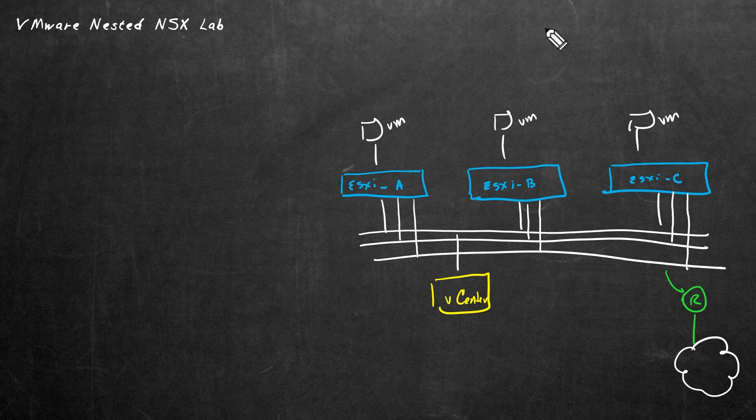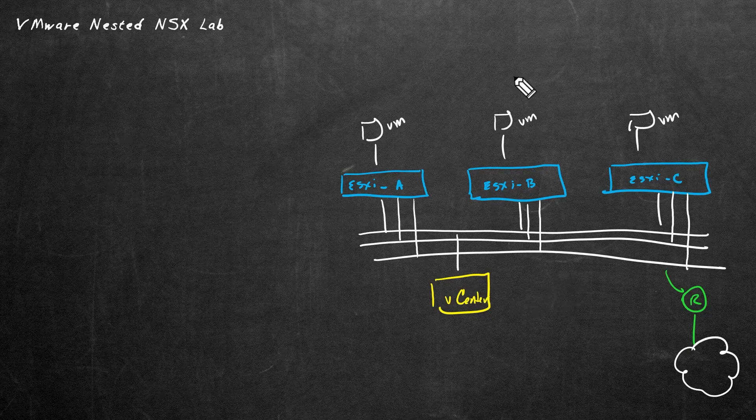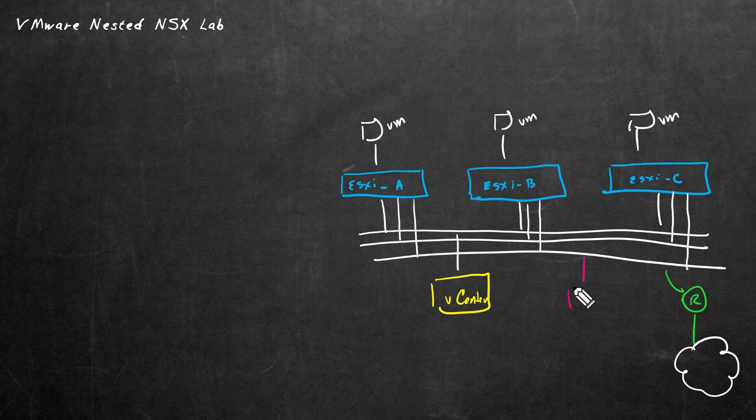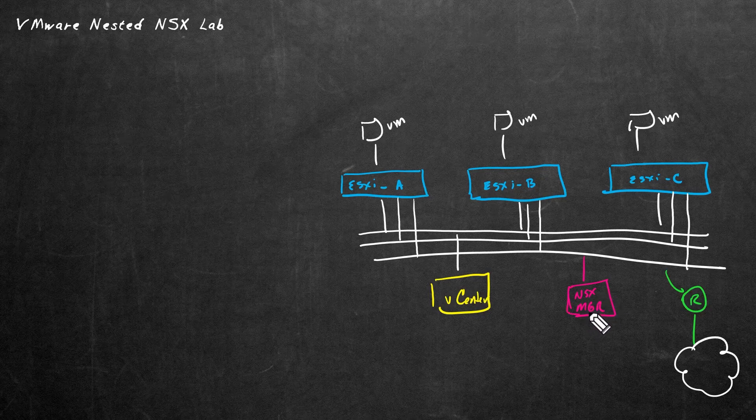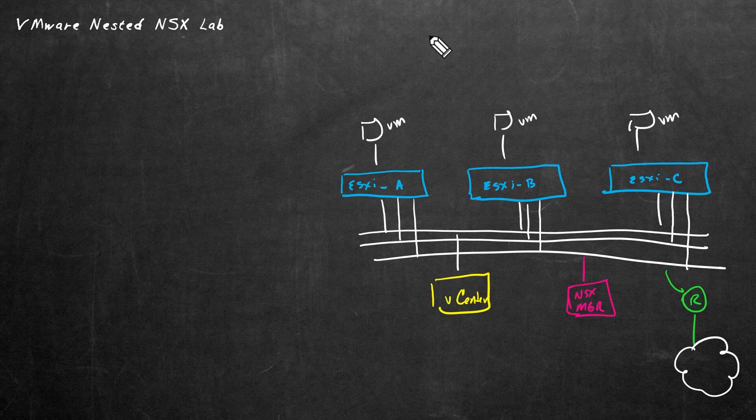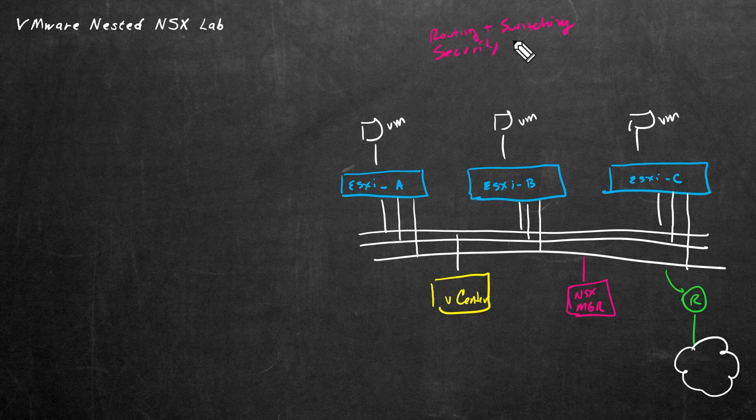Now, once we have a vSphere environment in place, we're also going to add on top of that, the NSX component. So to implement NSX, we're going to have yet another controller, and that's called the NSX Manager, which runs as a VM. And then once the NSX Manager is deployed and configured, we can then start using additional features, such as virtualized routing and switching, as well as security, including micro segmentation.